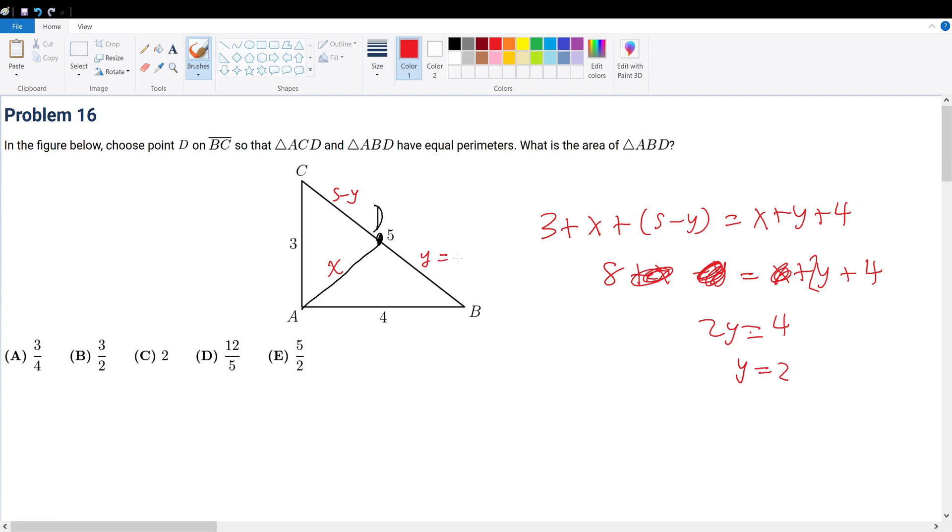That means this partition must be 2, and this partition must be 3. So now we're trying to find the area of ABD, which is right here. That's A, that's B, and that's D. This is 2, this is 4, and what is X?